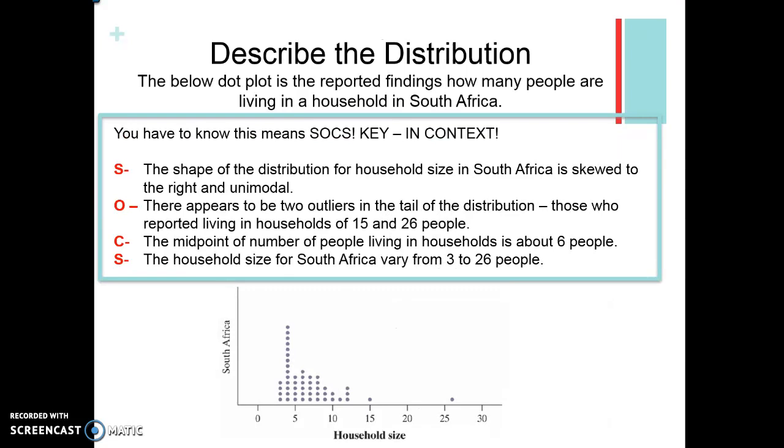Just remember when it says describe the distribution, you know to do socks. The other thing is to do it in context. Don't just say the shape of the graph is. Specifically what are we looking at? The shape of the distribution, notice I have the word distribution, for household size in South Africa is skewed to the right. I got a long right tail wagging down here. There appear to be two outliers, that's my O, at 15 and 26 people. Notice in context. The midpoint of the number of people living in the households, in context, is about six people. Look at where your data is clustered and sort of look at the center of that. The household size for South Africa varies from 3 to 26 people. Notice, sort of my range from 3 to 26 in context describing.